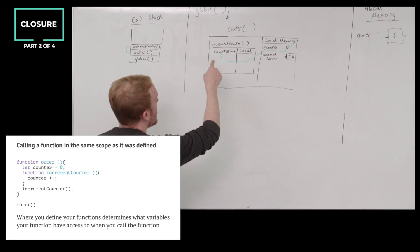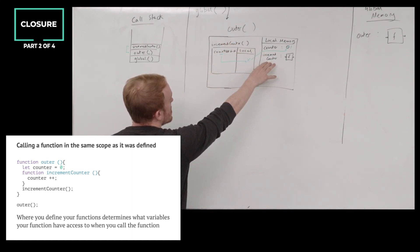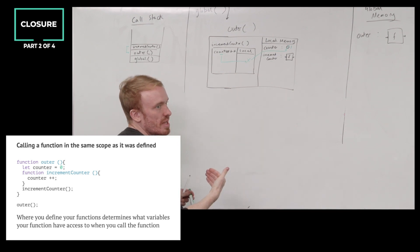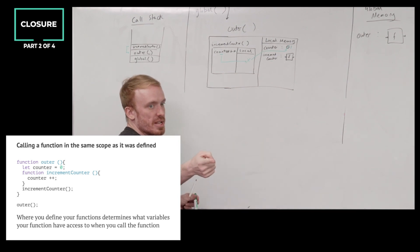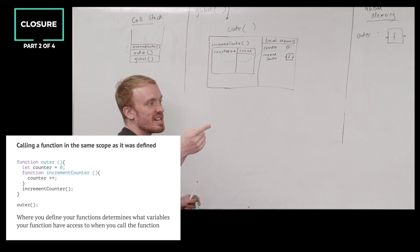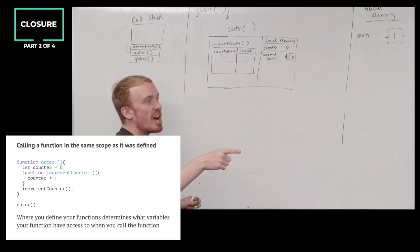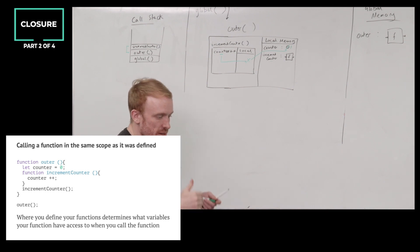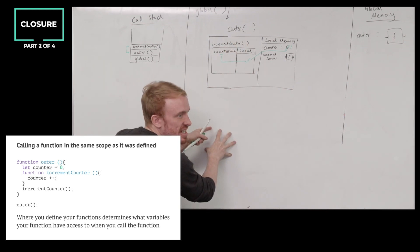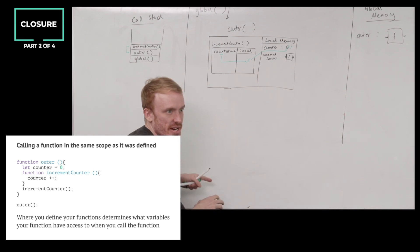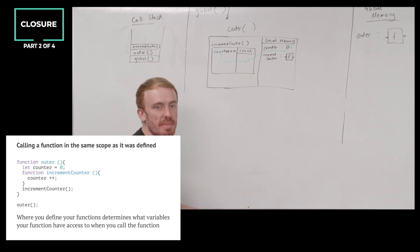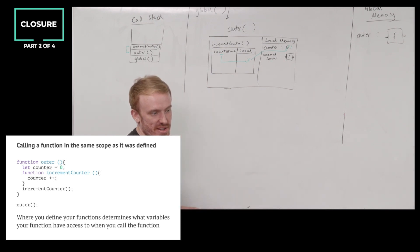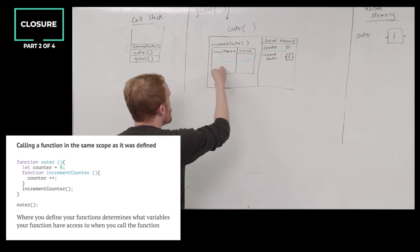Can anyone think of a way to test this — to run increment counter in a way that would test my theory that it's where I call it that matters? Philip: we can return the definition of increment counter out of outer. JD: we can call it outside of outer. Right — we can call increment counter out here. I know I defined it inside, but I'm calling it outside, so I can see what really matters: is it where I define it or where I call it?